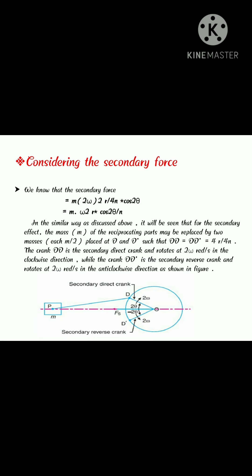Such that OD equal to OD dash equal to R by 4N. The crank OD is the secondary direct crank and rotates at 2 omega radians per second in the clockwise direction while the crank OD dash is secondary reverse crank.